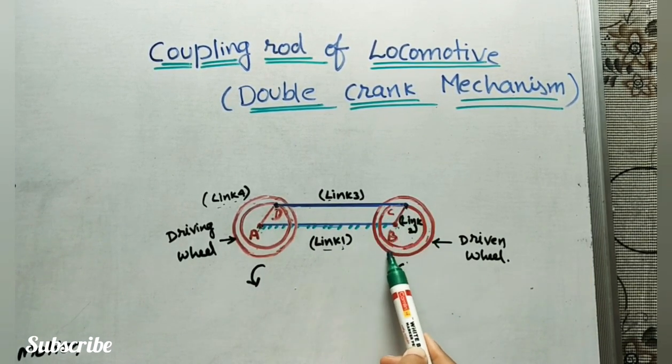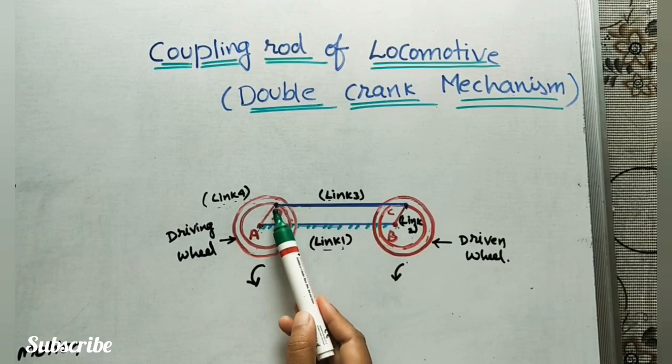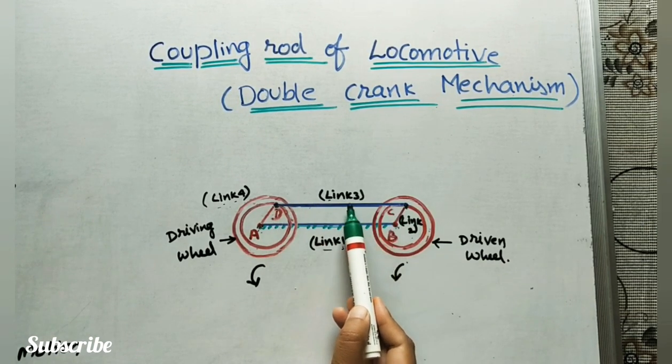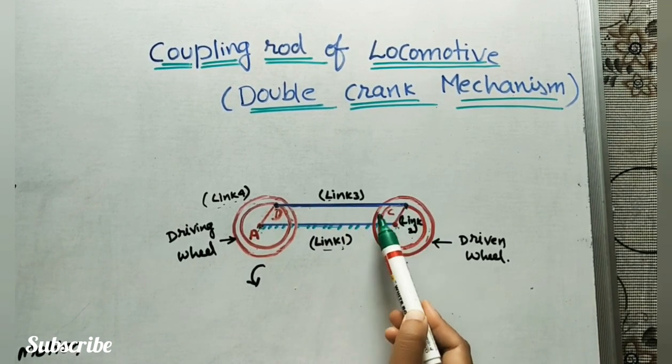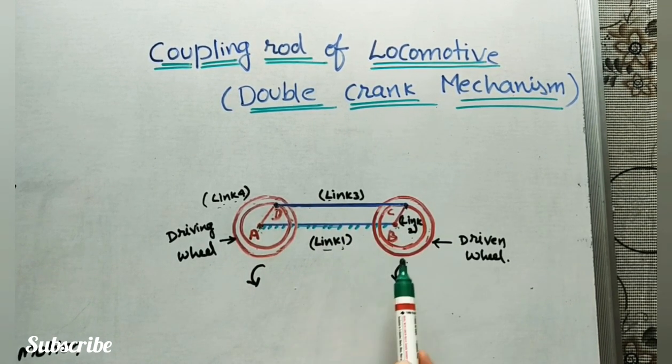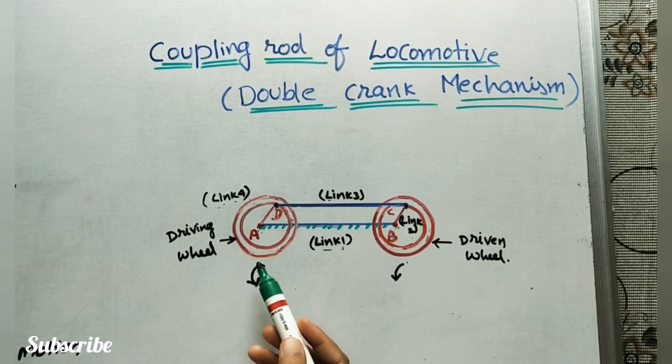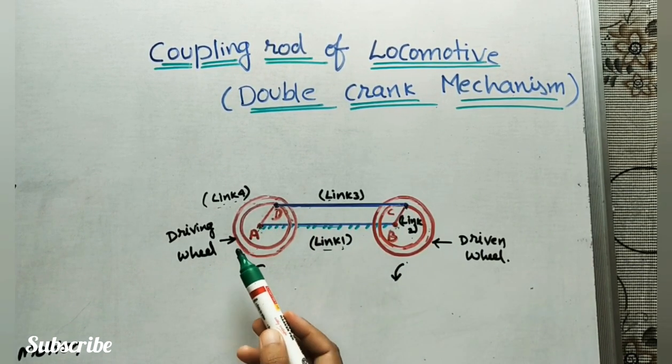This BC crank will also rotate because we are connecting these two cranks with the locomotive rod. That's why this wheel also moves, this wheel also rotates. So here we are giving the rotational movement from driving wheel to driven wheel.